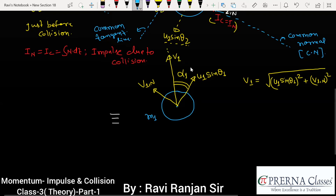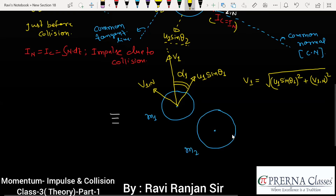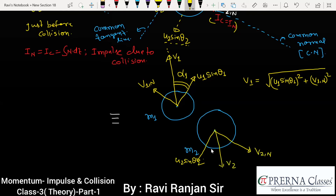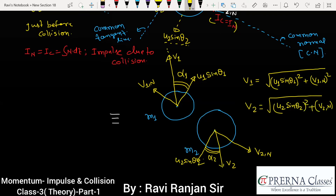Similarly for m2, after impact the velocity has two components: one along the common tangent which is U2 sin theta2, and the other along the common normal which is V2N. The resultant velocity V2 will be directed along that direction. If I consider that angle as alpha2, then the value of V2 will be the square root of (U2 sin theta2) squared plus (V2N) squared. So V1 and V2 are the resultant velocities of m1 and m2 just after collision.